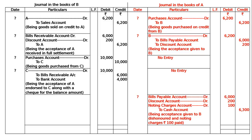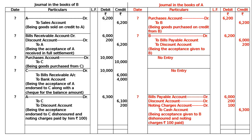Simultaneously, the entry in the books of B will be: A debited Rs. 6300 — Rs. 6000 for bill value, Rs. 200 for interest, and Rs. 100 for noting charges — to C Rs. 6100 for bill value, to discount Rs. 200. Being the acceptance endorsed to C, dishonored and noting charges paid by him (C) Rs. 100.